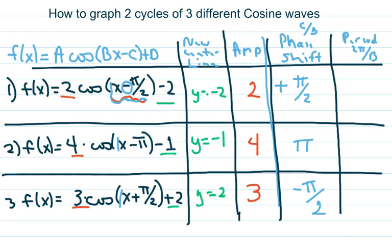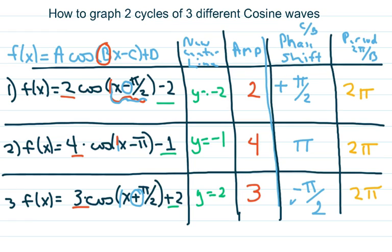Remember your phase shift is your horizontal shift. This was positive so I made it negative. The period is 2π over b — all of these have b equal to 1, so it's just 2π over 1, so my period on all of these is 2π. The next two videos I make I'll do three graphs with different periods.